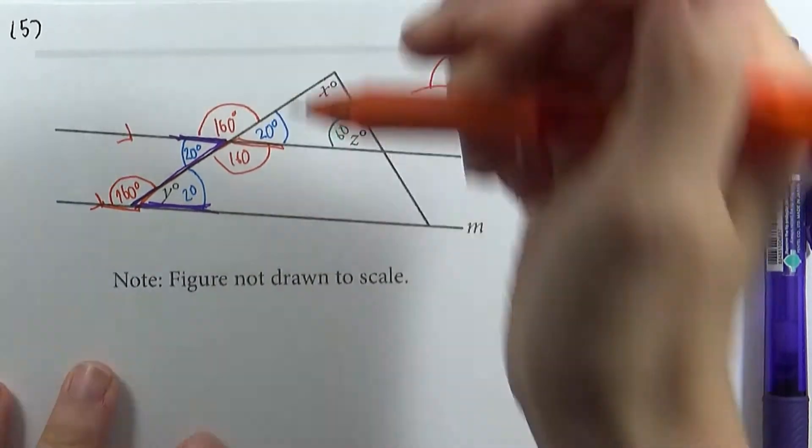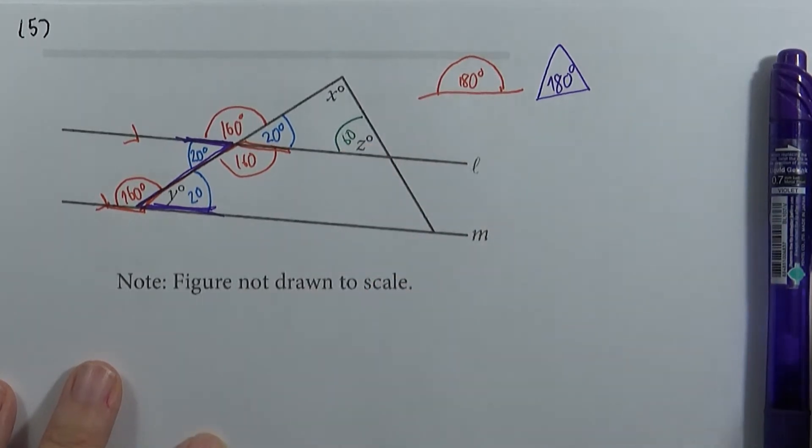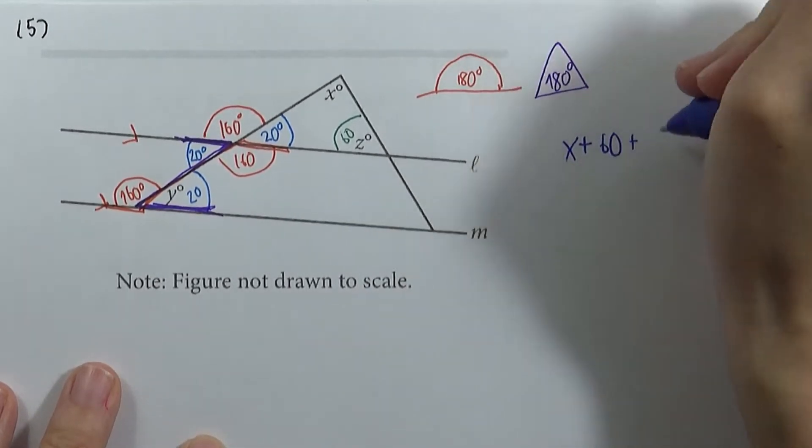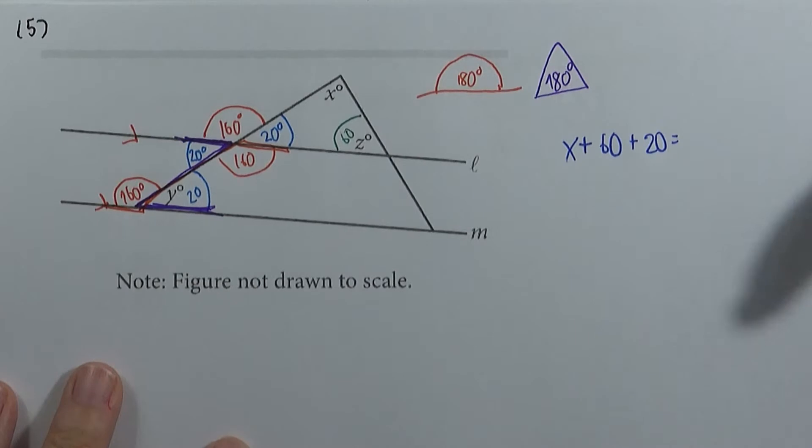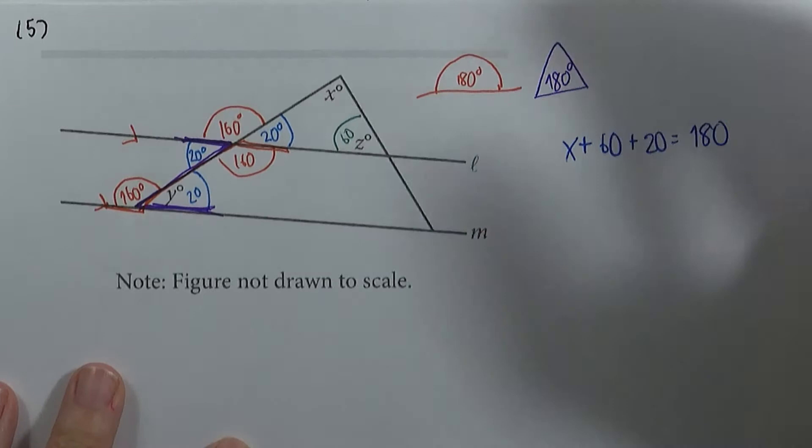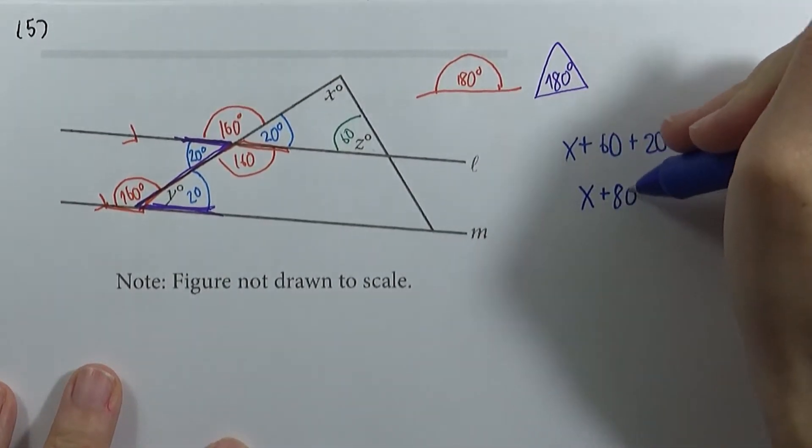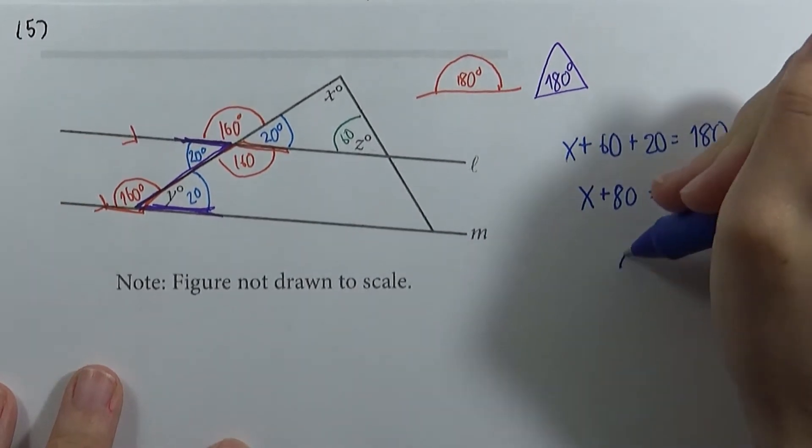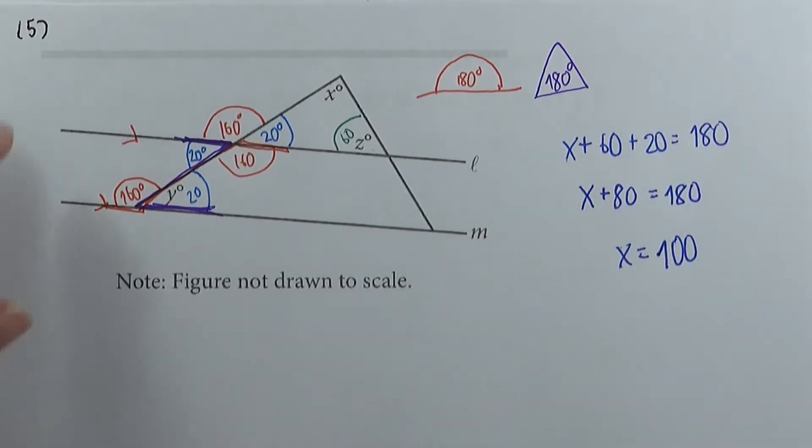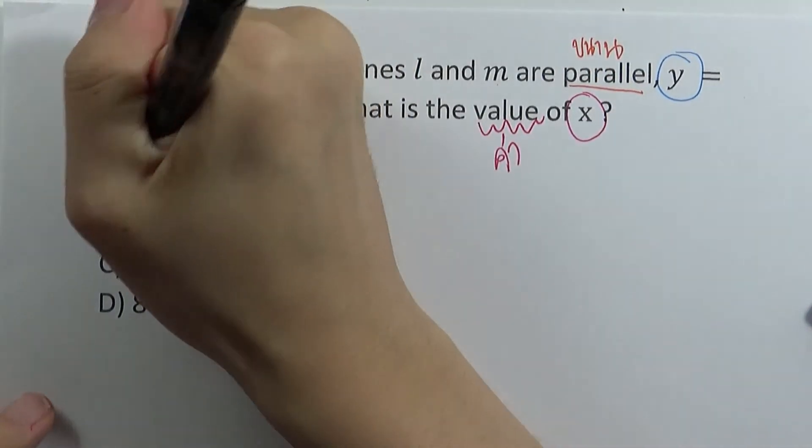Therefore, here it goes 20. Here it goes, Z is 60. Therefore, X plus 60 plus 20. 180 is equal to 180. Therefore, this is X plus 80. This is 100. We have to stop. 100 is equal to B. We are going to go back.